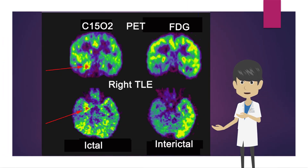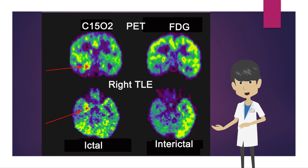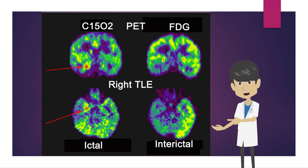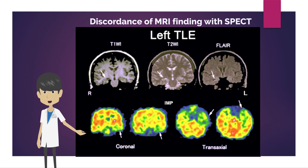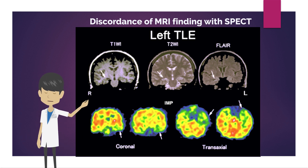In right temporal lobe epilepsy, PET images of brain perfusion with O-15 carbon dioxide inhalation showed increased perfusion in the right hippocampal region, which may be due to seizure evoked by hyperventilation. During the interictal phase, FDG PET shows a wide area of hypometabolism in the right temporal lobe. In most cases of temporal lobe epilepsy, the MRI findings of hippocampal sclerosis — that is, hippocampal atrophy and high signal on T2-weighted or FLAIR images — coincide with the lateralization of decreased perfusion.